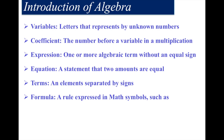What are variables? Letters that represent unknown numbers are called variables. What is a coefficient? The number before a variable in a multiplication is known as the coefficient. An expression is one or more algebraic terms without an equal sign.